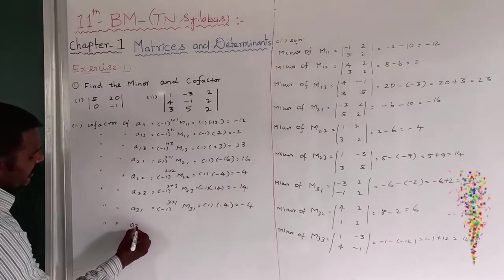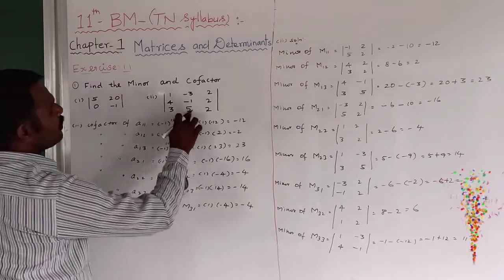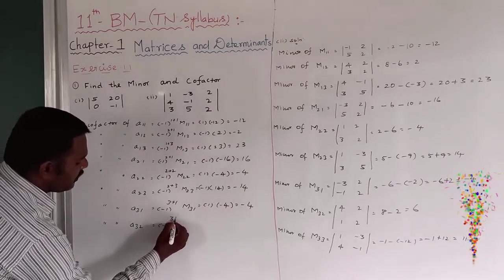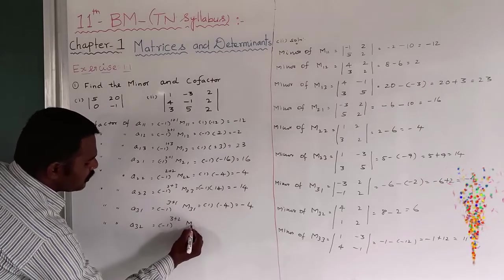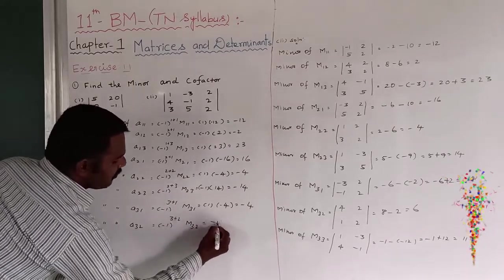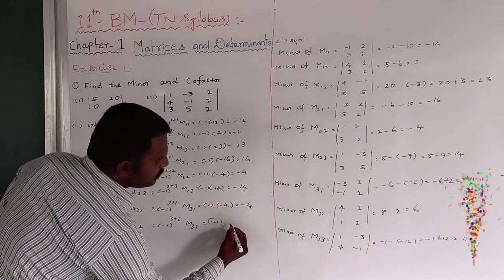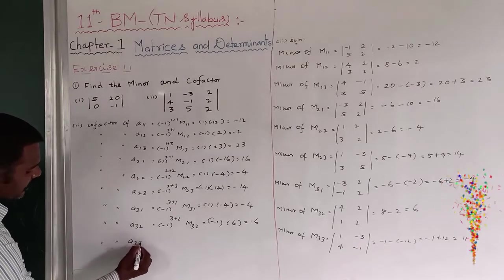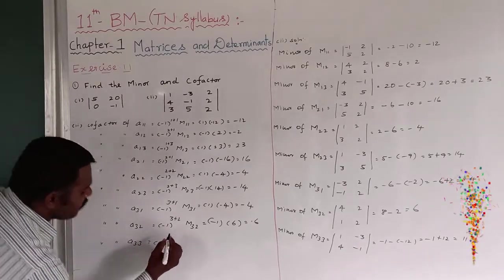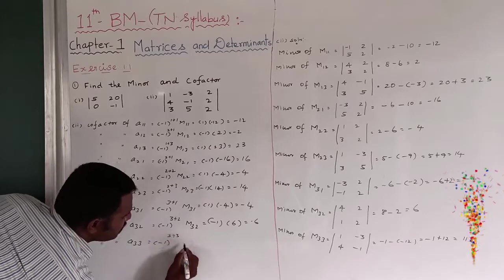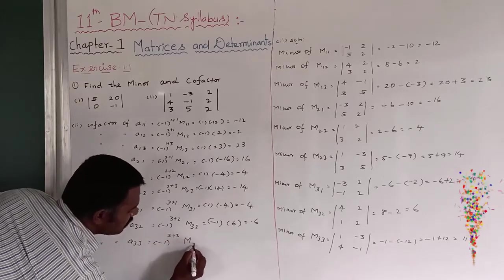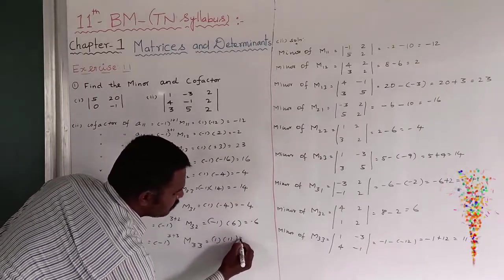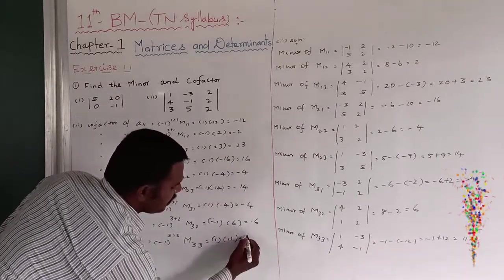Cofactor of a32, third row second column — indirectly meaning the cofactor of that element: 3 plus 2 equals 5, so minus 1 to the power 5 means it is going to be minus 1. M32 is equal to 6, so this is equal to minus 6. And cofactor of a33: minus 1 to the power 3 plus 3, times M33. So plus 1. M33 is equal to plus 11, so this is equal to plus 11.